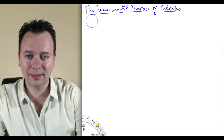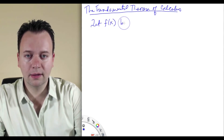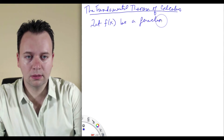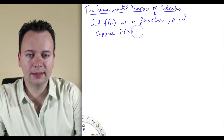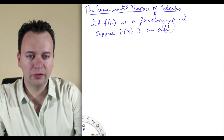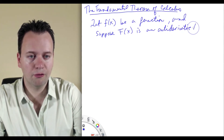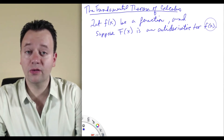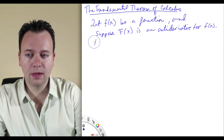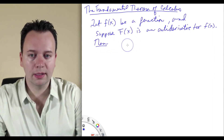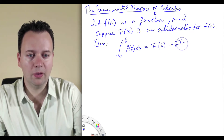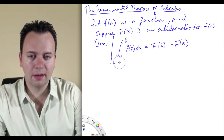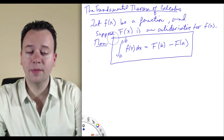The Fundamental Theorem of Calculus is as follows. Suppose we have a function f of x, and suppose that capital F of x is an antiderivative for little f of x. In other words, the derivative of capital F of x is the function little f of x. In this circumstance, the integral from a to b of f of x dx is equal to capital F of b minus capital F of a.